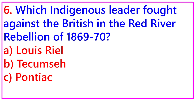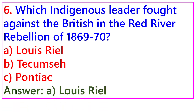Question 6: Which indigenous leader fought against the British in the Red River Rebellion of 1869-70? A. Louis Riel, B. Tecumseh, C. Pontiac. Answer: A. Louis Riel.